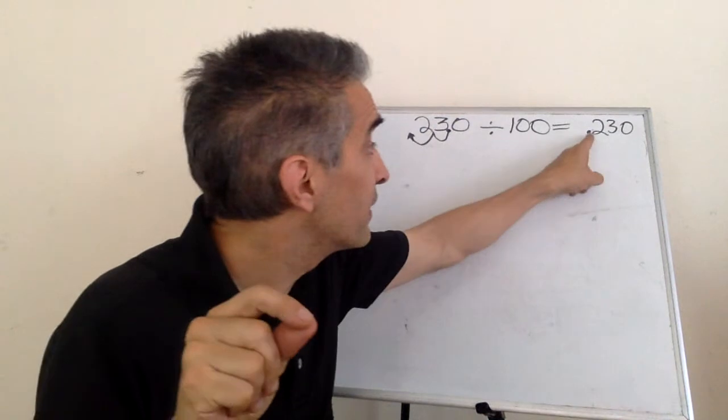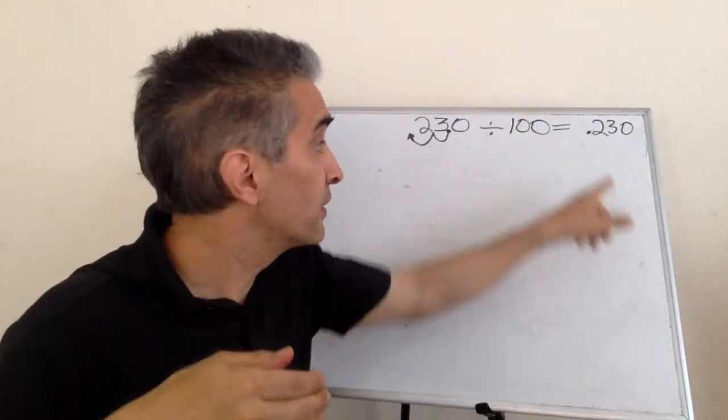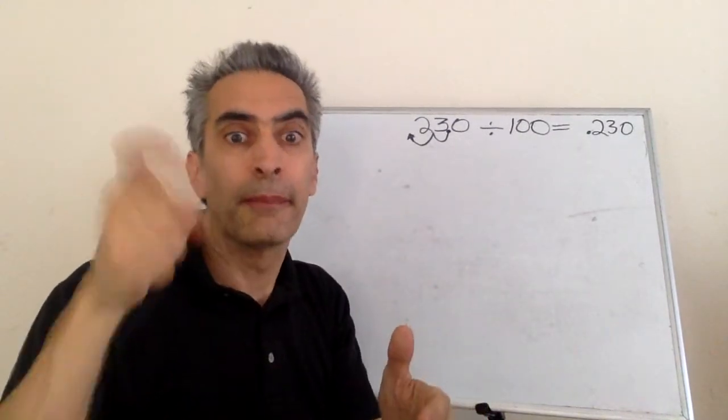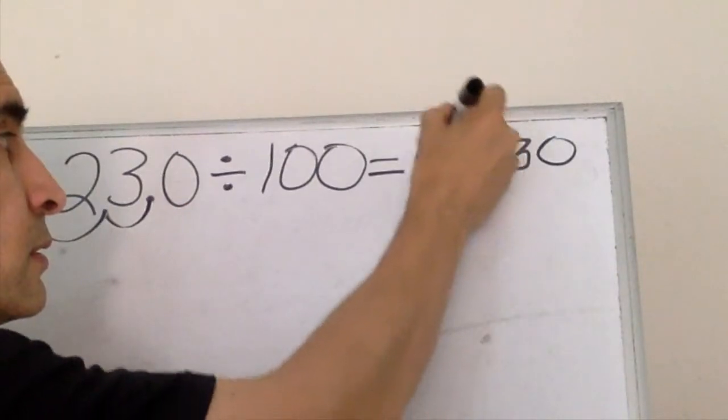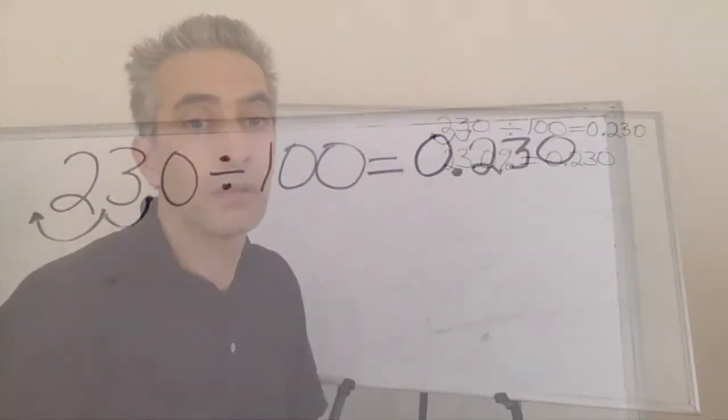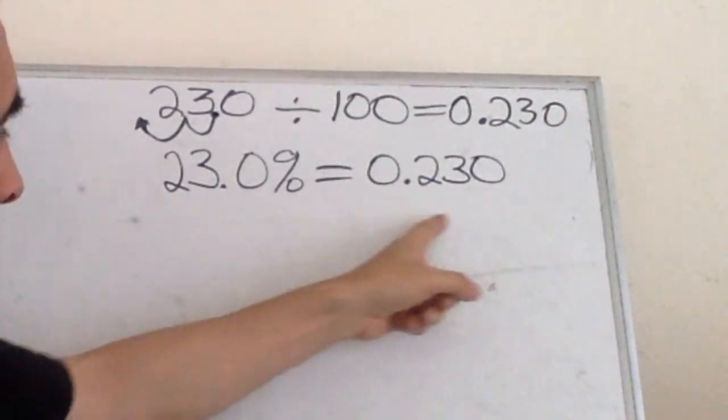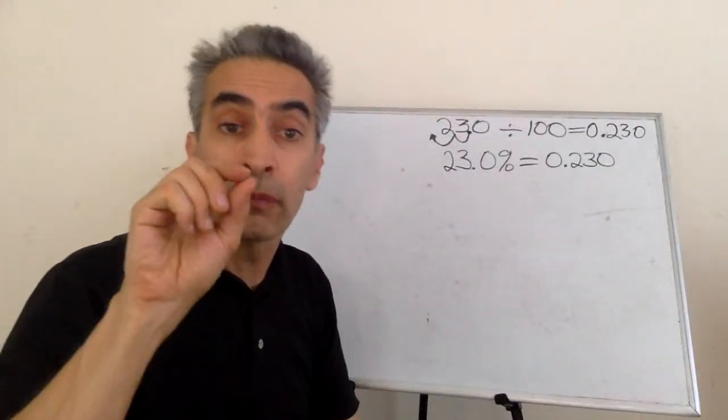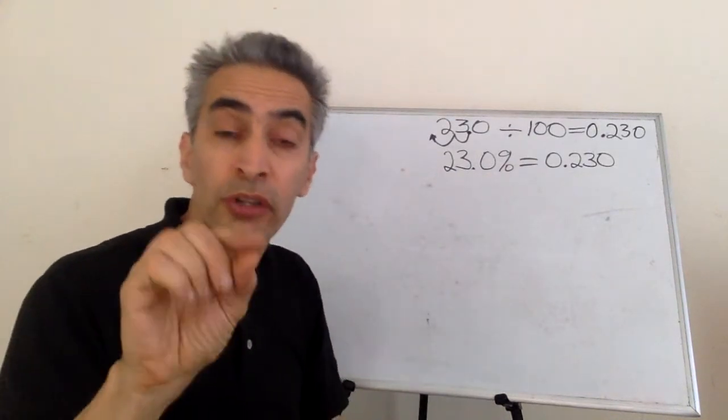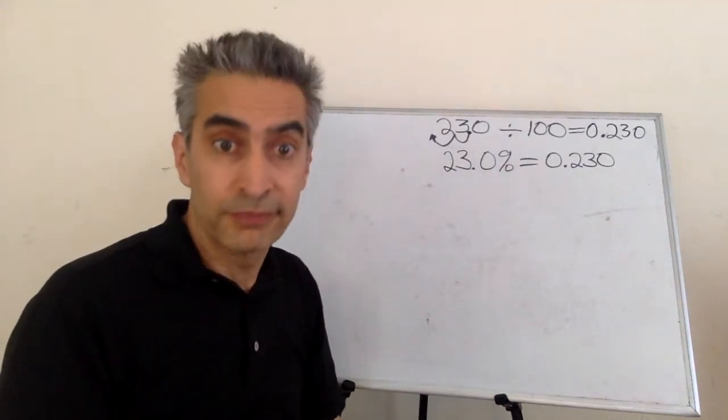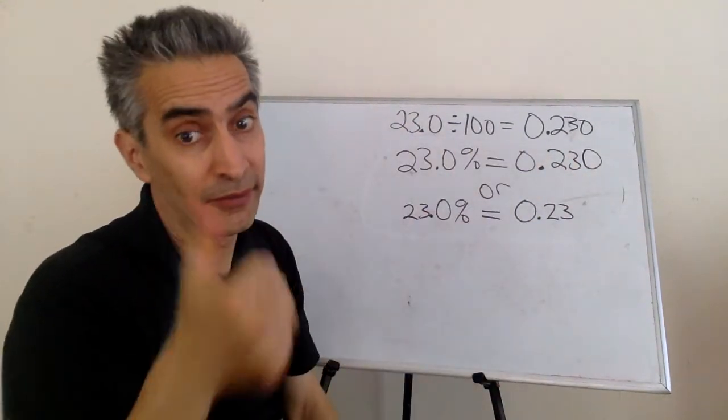See the decimal point? If there's no number in front of it, then we're going to have to write a zero. The answer is 23.0 percent equals 0.230 or we can just get rid of this zero.